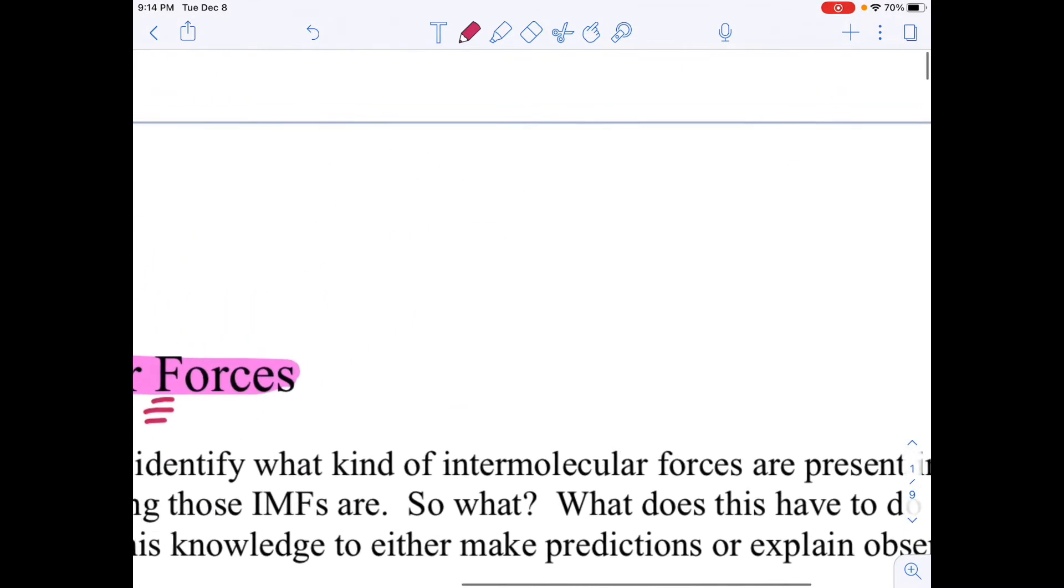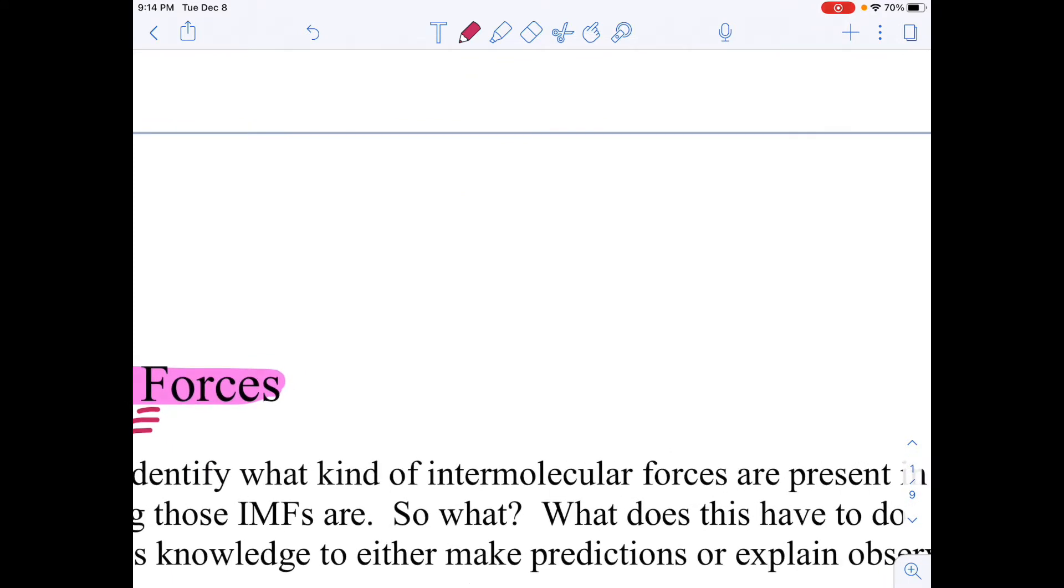Just a reminder, types of IMFs: you have weak ones, you have strong ones. The weakest ones are the London forces. You have dipole-dipoles, and then the strongest are hydrogen bonds. So we'll keep that in mind as we progress. If you need to review that, please go back one lecture or two.